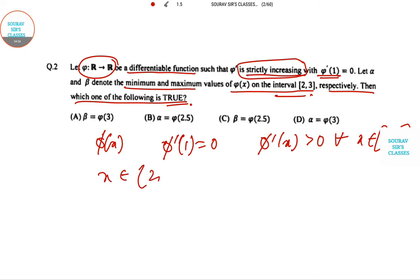φ(x) cannot have a maximum or minimum at any point within (2,3). There's no max or min in the interior. This is very important to remember.